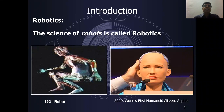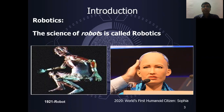First of all, let us talk about Robotics. Robotics was founded in 1921. And today, in 2020, we are seeing that the first humanoid citizen is a robot — his name is Sophia. This is a significant development in the robotics area.